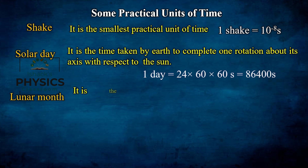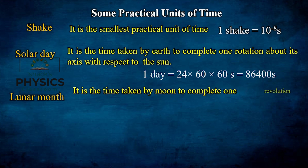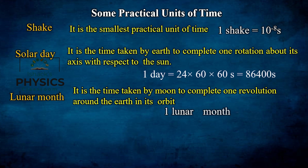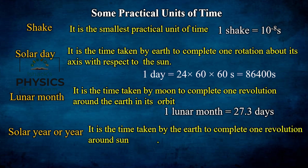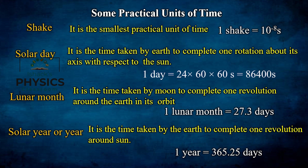The lunar month is the time taken by the Moon to complete one revolution around the Earth in its orbit. One lunar month equals 27.3 days. The solar year is the time taken by the Earth to complete one revolution around the Sun. One solar year equals 365.25 days — the 0.25 extra gives rise to the concept of a leap year, where February has 29 days every 4 years.